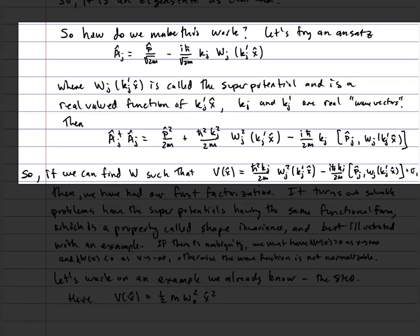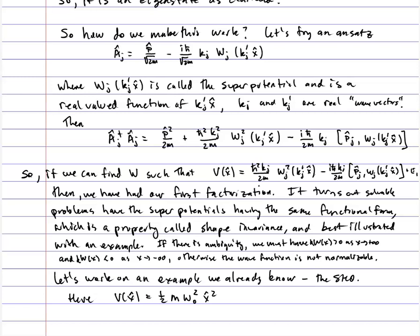It turns out that solvable potentials always have superpotentials that have the same functional form for every Wⱼ. When that occurs, that property is called shape invariance, and it's best illustrated with an example. There often is an ambiguity in how we pick the factorization; what we need is k times the superpotential to be larger than 0 as x → +∞ and less than 0 as x → −∞, otherwise the wave function will not be normalizable.